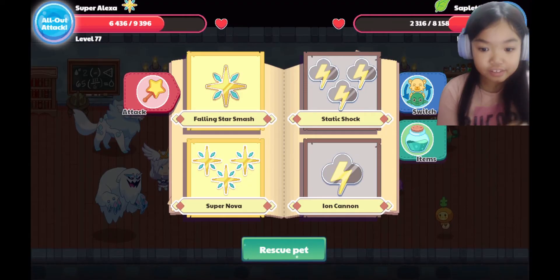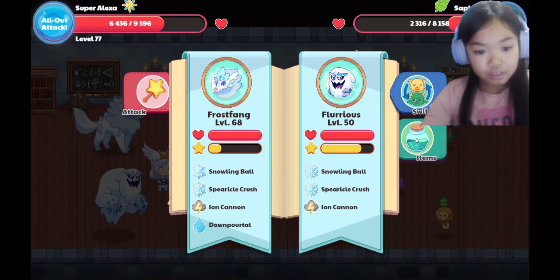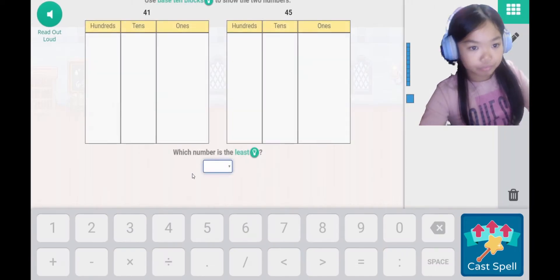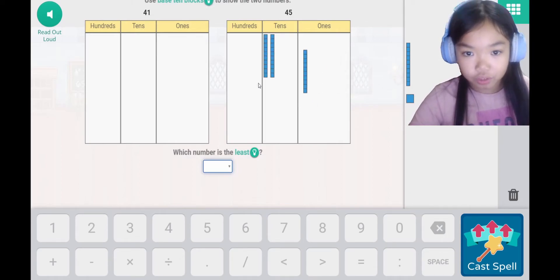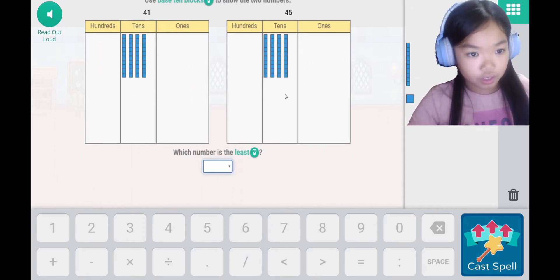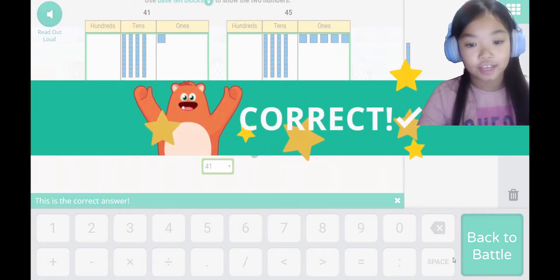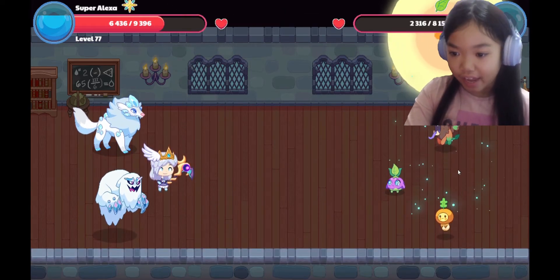That hurt me a lot. I never rescued it, but I don't know. Let's switch back to me and do Supernova. Use base 10 blocks to show the two numbers, 45 and 41. 1, 2, 3, 4. 1, 2, 3, 4. And 1, 2, 3, 4, 5 ones. And 1, 1, 4, 41. Which number is the least? 41 because 1 is less than 5. Woo-hoo. The sun goes up, then it goes down. Look out.